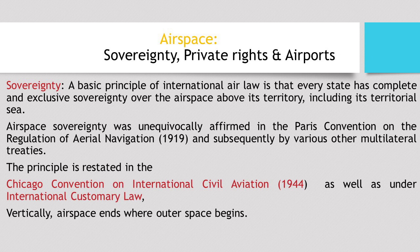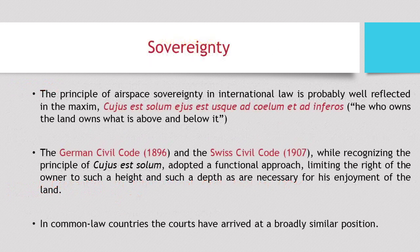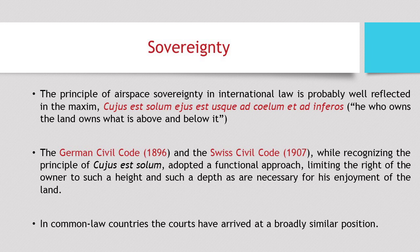Vertically, air space ends where outer space begins. With regarding to sovereignty, there is a famous legal maxim: he who owns the land owns what is above and below it. Apart from this, there are two more codes — the German Civil Code of 1896 and the Swiss Civil Code of 1907 — which recognize this principle, stating that the owner's right extends to such a height and depth as are necessary for his enjoyment of the land, without fixing any particular limit.